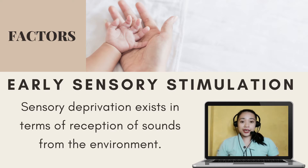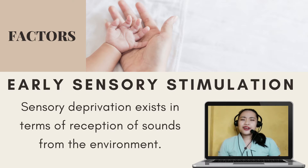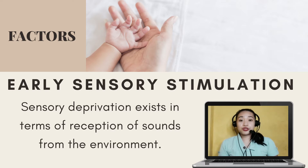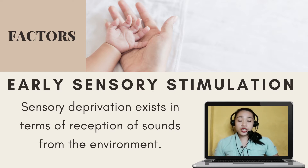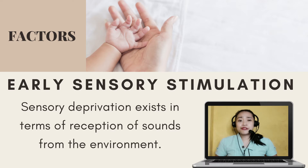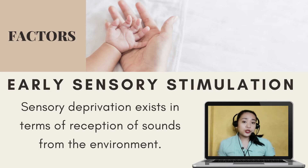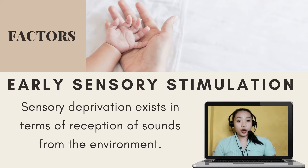The third factor that affects development is early sensory stimulation. Children under 6 years of age tend to be farsighted because their eyes have not matured and are shaped differently from those of adults. After that age, the eyes not only are more mature but can focus better. About 10% of 6-year-olds have defective near vision, and 7% have defective distant vision. Sensory deprivation also exists in terms of the reception of sounds from the environment. Children may also suffer from auditory problems.